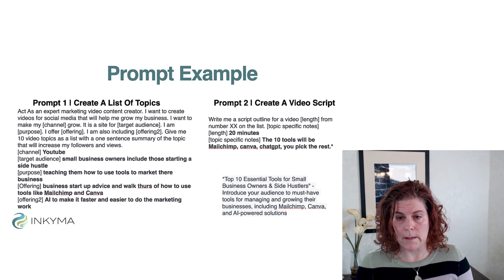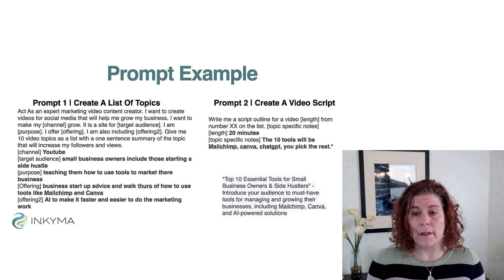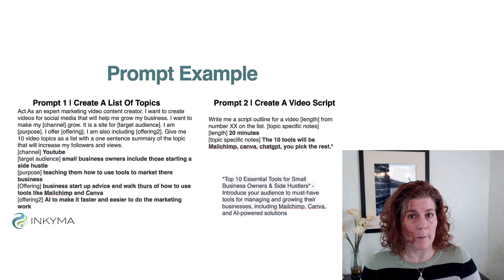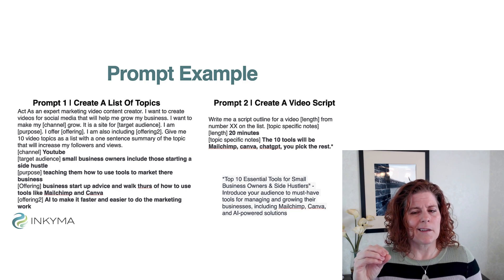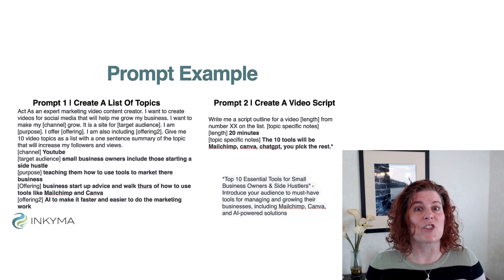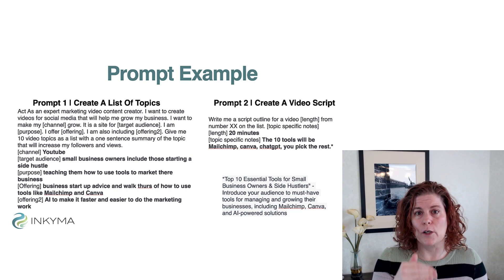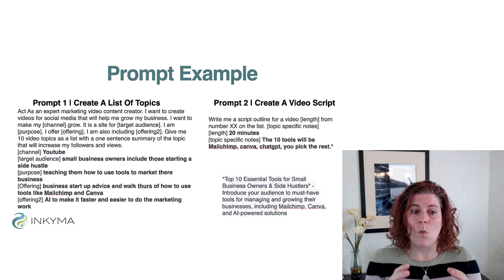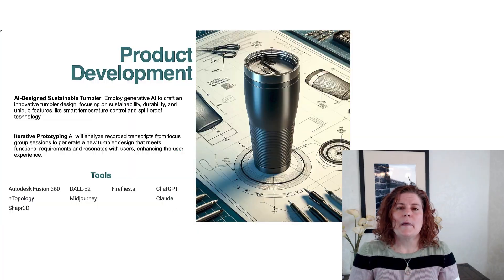I select a topic — say number two or number three from the list — and give it specific notes: I want a 20-minute video outline, include these specific tools, and pick some others because I'm curious what else it comes up with. Because it's an outline, I can change it just like with long-format content. The key is to always request things in steps so it can learn and grow within that one chat window. Don't forget to ask for correct formatting. Once you have a prompt you like that you know you'll reuse — because I know I'm going to be making lots of videos — you create a prompt library to grab it and reuse it, not just for yourself but for your team as well.